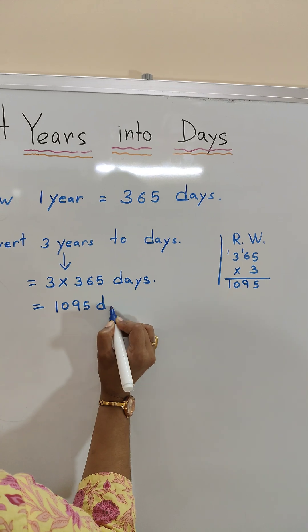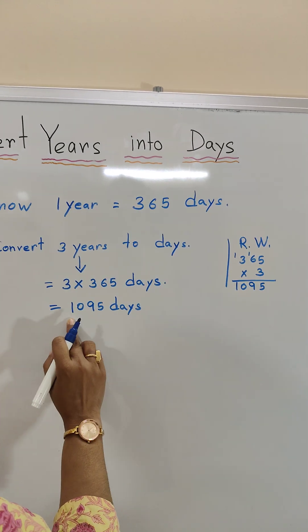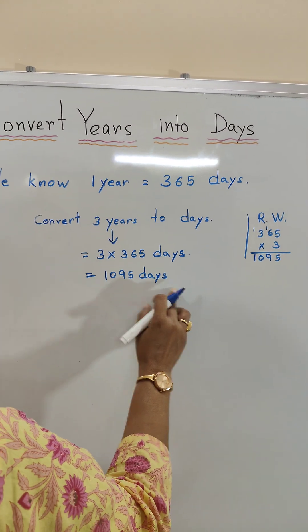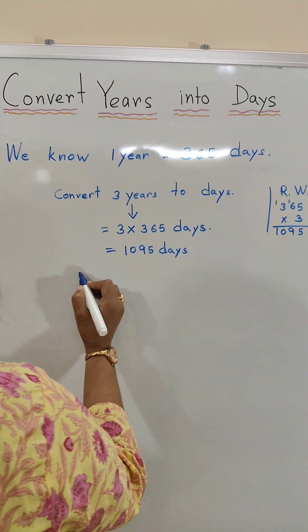1095 days. So three years is equal to 1095 days. Now let us do another example.